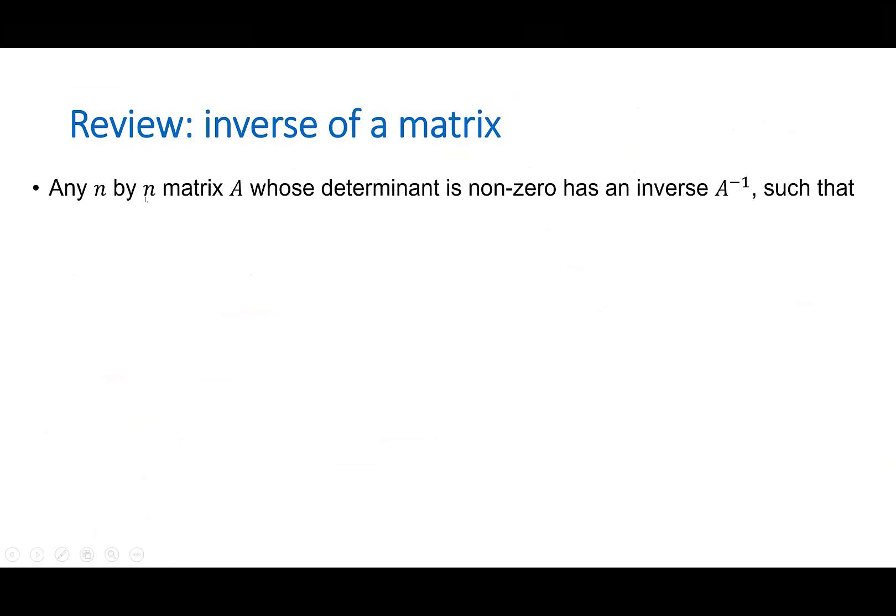Any n by n matrix A whose determinant is non-zero has an inverse such that that matrix multiplied by its inverse is the identity matrix. So, what is i?